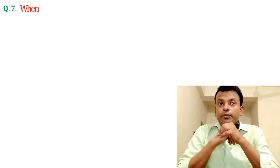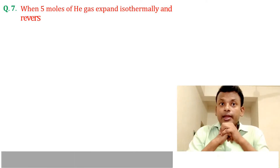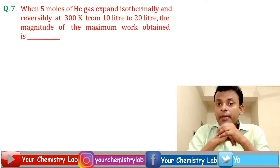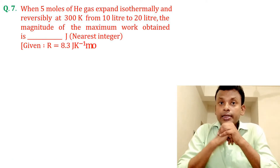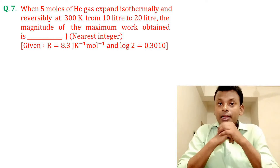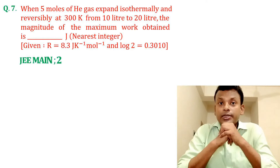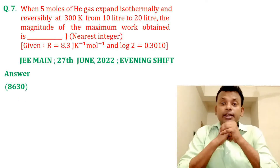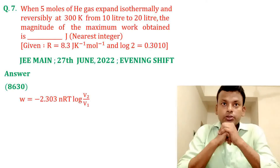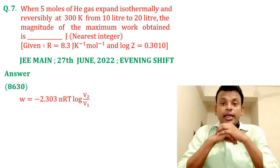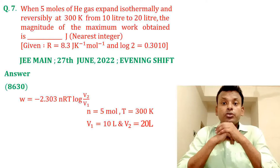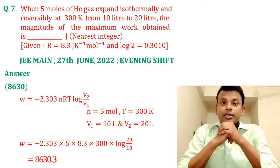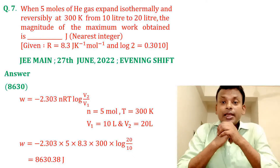Question 7. When 5 moles of helium gas expand isothermally and reversibly at 300 K from 10 L to 20 L, the magnitude of the maximum work obtained is asked in joules (nearest integer). Given R = 8.3 J/K·mol. This question was set in JEE Main 27th June 2022 evening shift. Answer is 8630. Using W = −2.303nRT log(V₂/V₁) with n=5, T=300 K, V₁=10 L, V₂=20 L gives W = 8630.38 J.